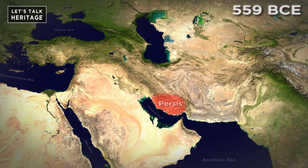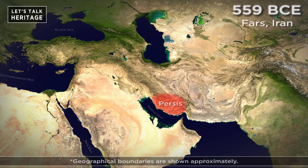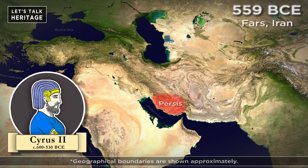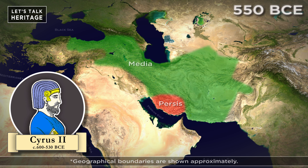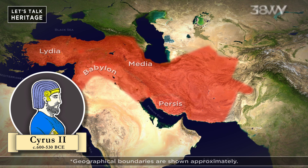In 559 BCE, the Persian king Cyrus of the Achaemenid dynasty was ruling in the modern Fars region of Iran. King Cyrus defeated his overlord of Media in 550 BCE and started expanding his kingdom. After Media, he conquered the kingdoms of Lydia and Babylon.